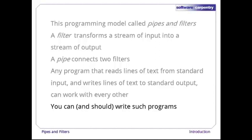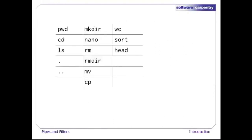To summarize, we now have a bunch of commands for moving around the file system, and three for working with text: wc to count things, sort to sort them, and head to select lines from the front of a file. After this episode is over, please go and explore a few other simple text processing commands, such as tail, split, cut, and uniq. Remember, each tool you learn multiplies the power of the tools you already know.